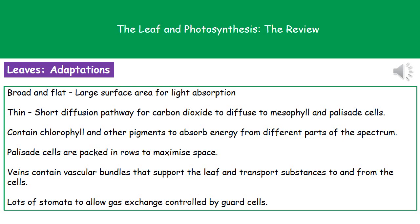Leaves also tend to be very thin. The purpose of that is to make sure there is only a very short diffusion pathway — a short distance for gases such as carbon dioxide to move. The plant needs to take in carbon dioxide from the air through those stomata and reach the palisade cells for photosynthesis.